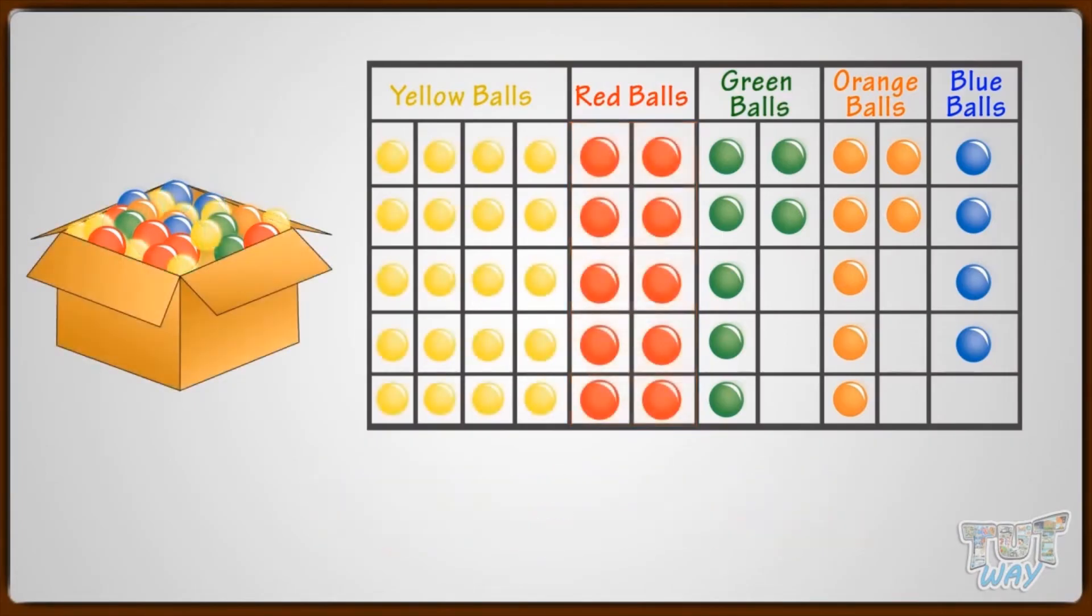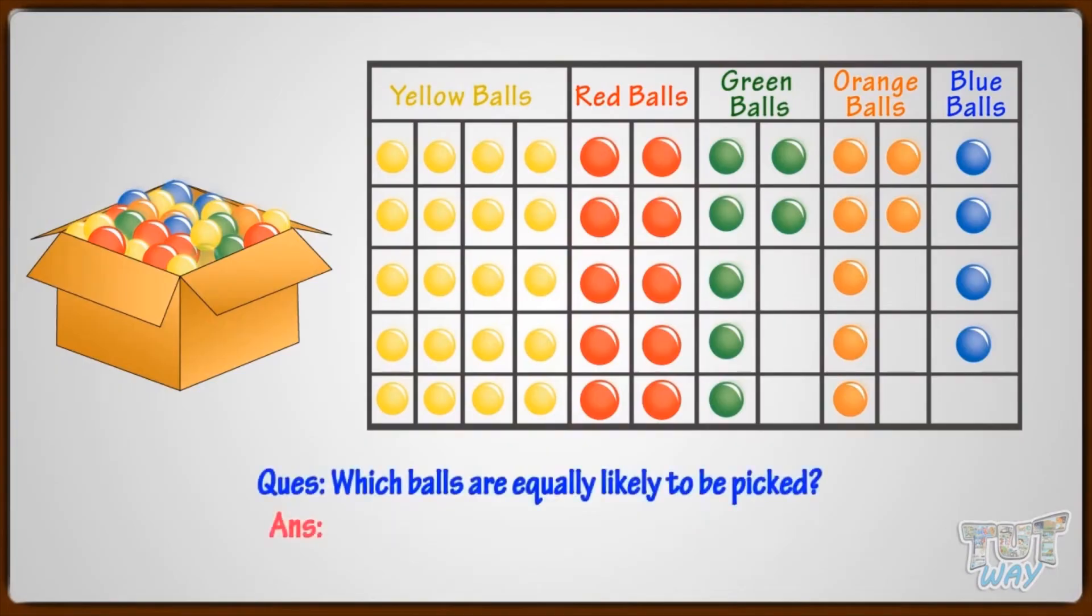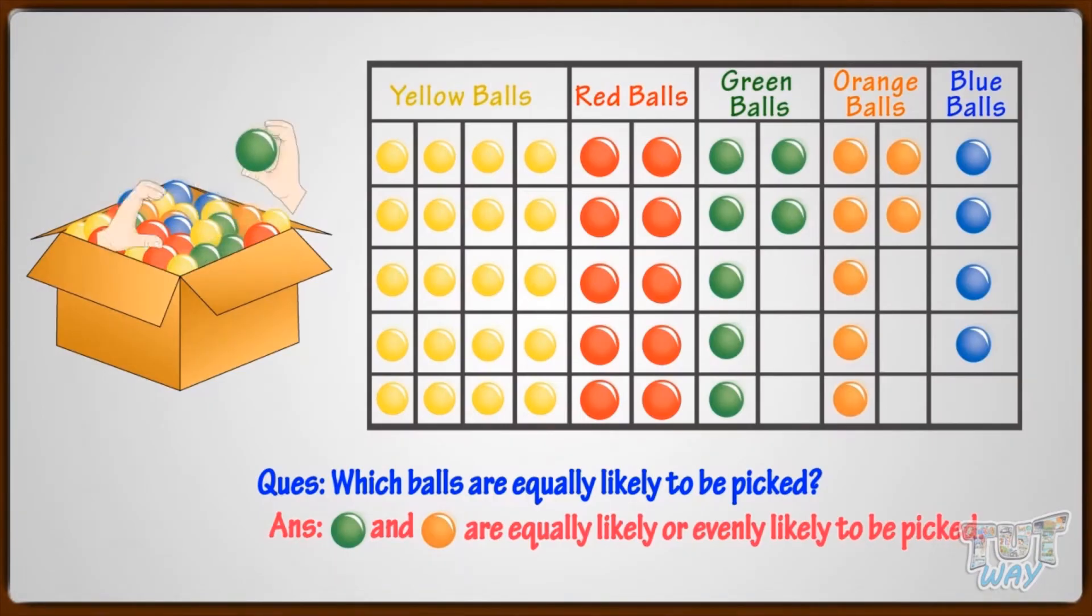Now, which balls are equally likely to be picked? Green and orange balls are equally likely or evenly likely to be picked as they are same in number.